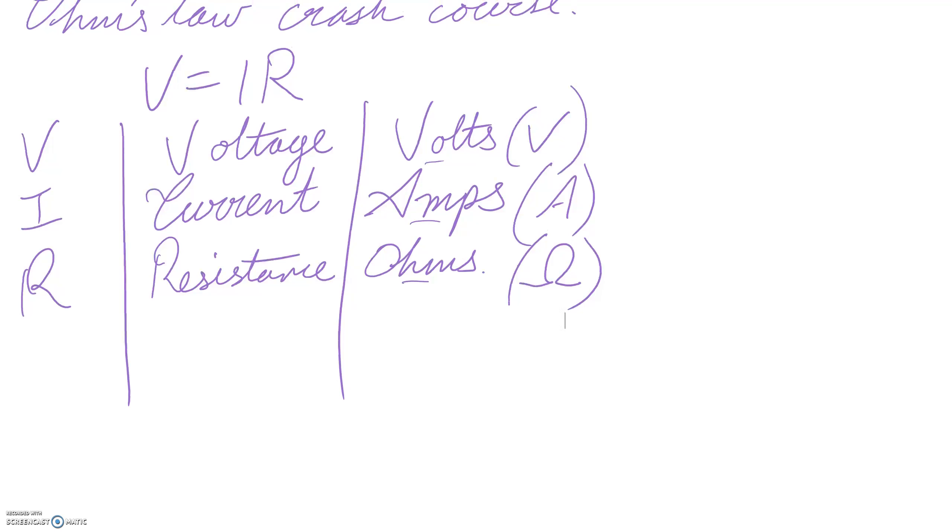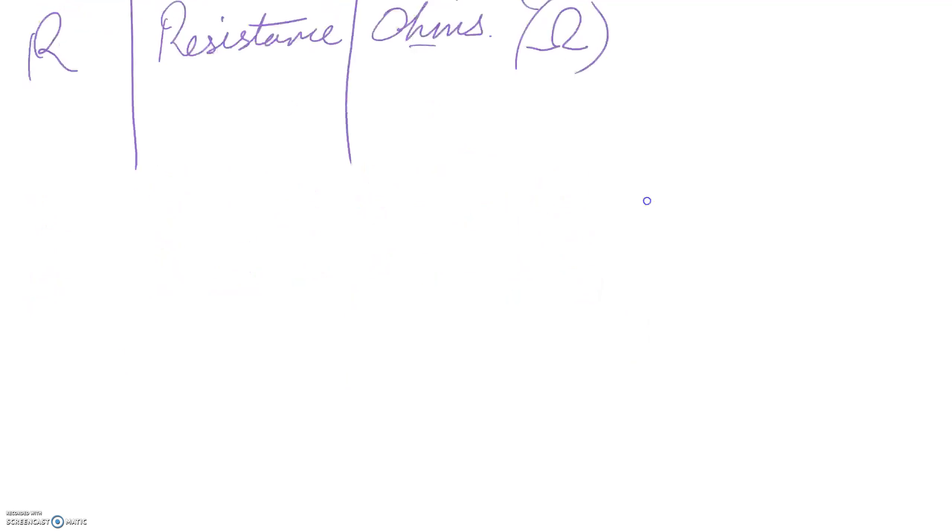That's all well and good for using the formula. But what do these mean? Well, let me show you. Simple circuit. We're going to have a cell, a bulb. Short end of the cell is the negative terminal. Long end of the cell is the positive terminal.